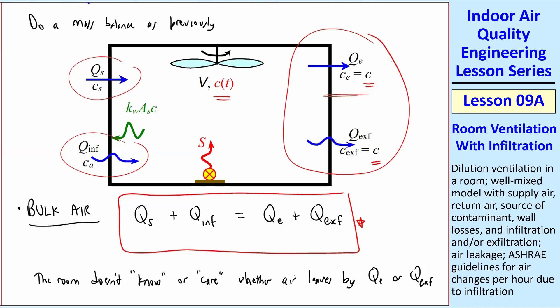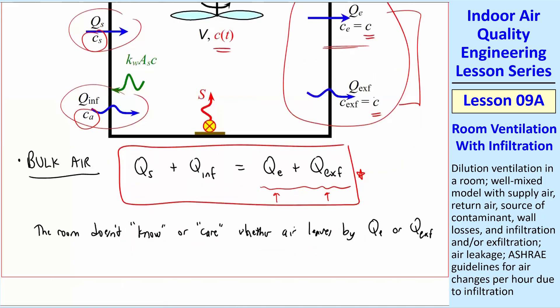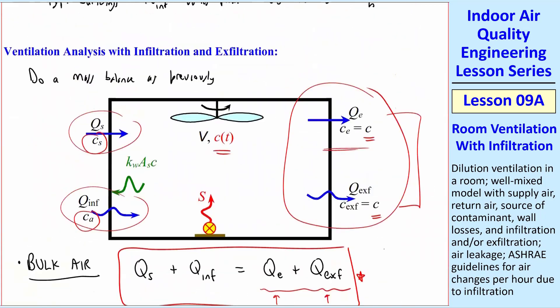But since they both have C as their concentration, it doesn't really matter. So Q_E and Q_EXF often occur together in an equation because they both have the same mass concentration. But Q_S and Q_INF are different because the C concentration is different. It's C_S for the supply and it's C_A for the infiltration. So keep that in mind. This will become important later when we do recirculation.